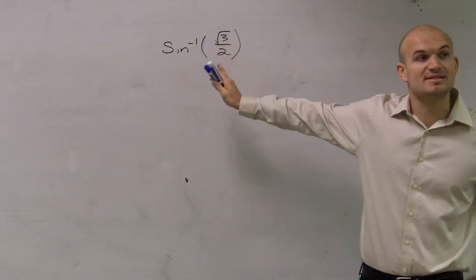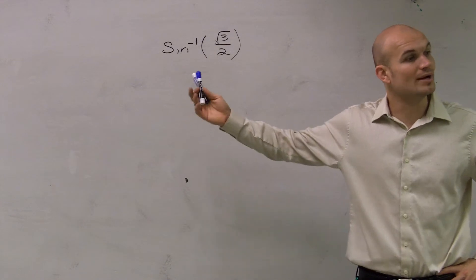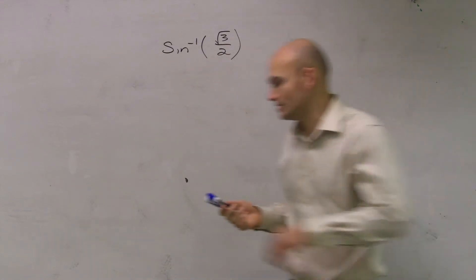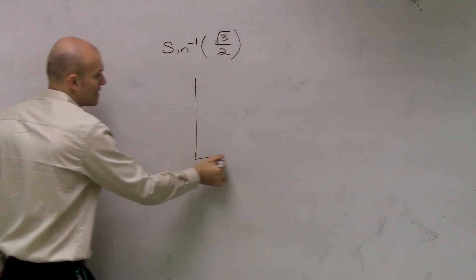So I need to figure out, remember, sine represents the y value of our coordinate point on the unit circle. So what I need to do is determine what coordinate point am I dealing with. Well, when looking at my unit circle, since I have it ingrained in my brain by now.